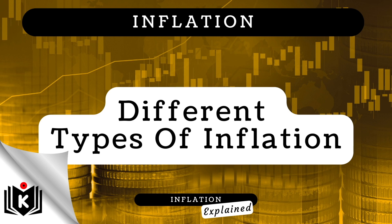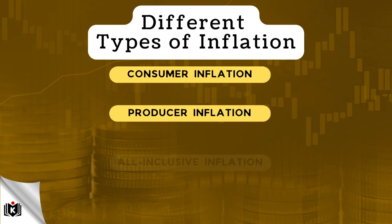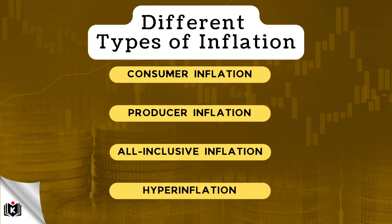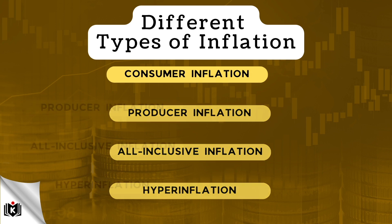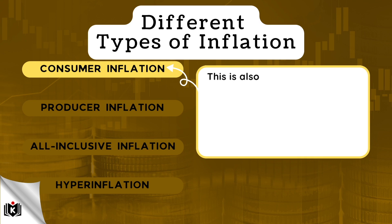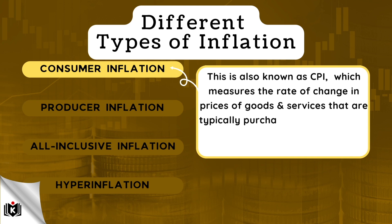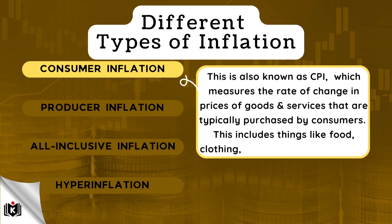There are different types of inflation. In this next section, we will look at the following four types: consumer inflation, producer inflation, all-inclusive inflation, and hyperinflation. Let's briefly discuss each of these types, starting with consumer inflation. This is also known as CPI, which measures the rate of change in prices of goods and services that are typically purchased by consumers. This includes things like food, clothing, transportation, and housing.